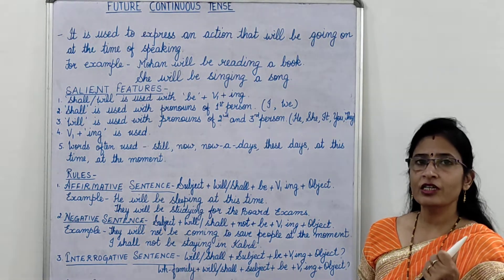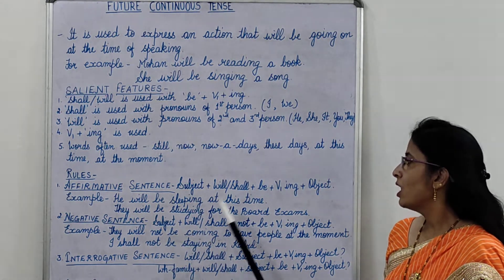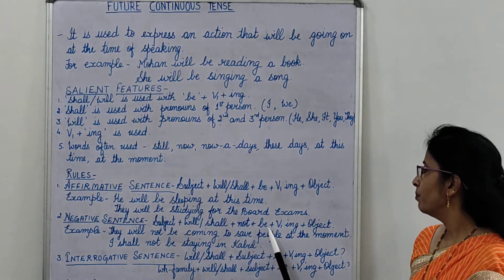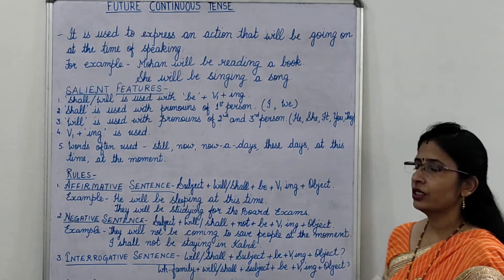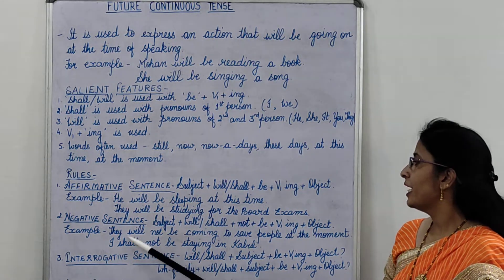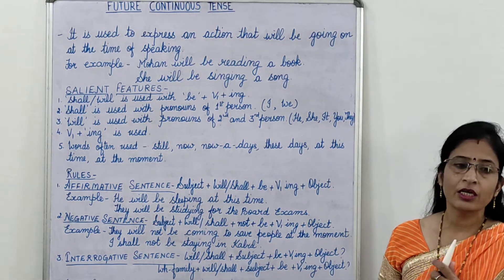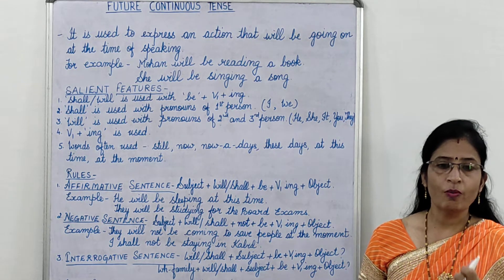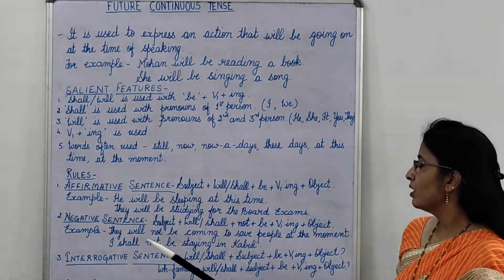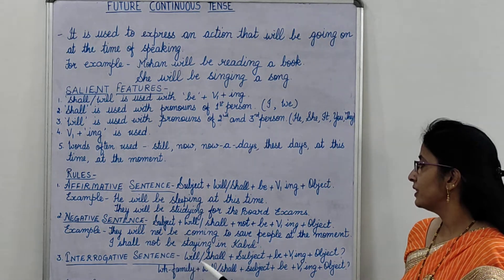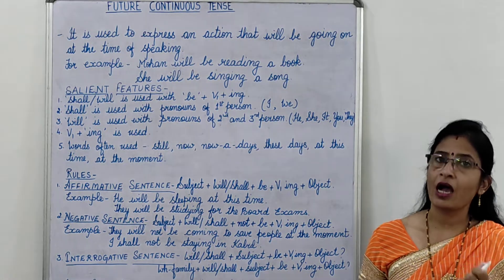Now we come on to negative sentence, which are negative in nature. Subject plus will or shall plus not plus be plus first form of verb plus ing plus object. For example, they will not be coming to save people at the moment. वे इस पल लोगों को बचाने नहीं आ रहे होंगे। I shall not be staying in Kabul. मैं काबुल में नहीं रहा होऊंगा।